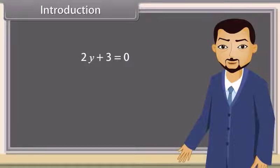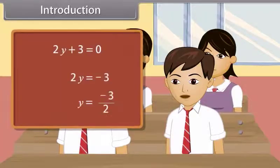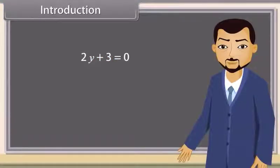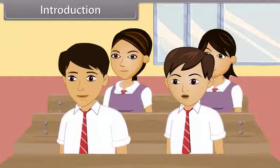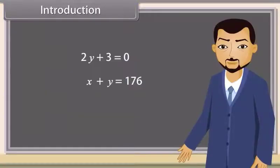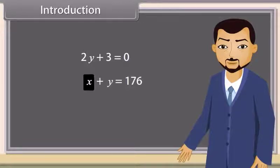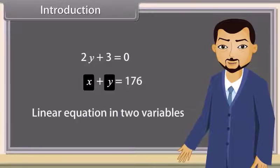Can you solve this equation? Yes, this is so easy. Correct. Now tell me which equation is this? This is also a linear equation. Yes, this is also a linear equation. But it has two variables, x and y. So it is called a linear equation in two variables.